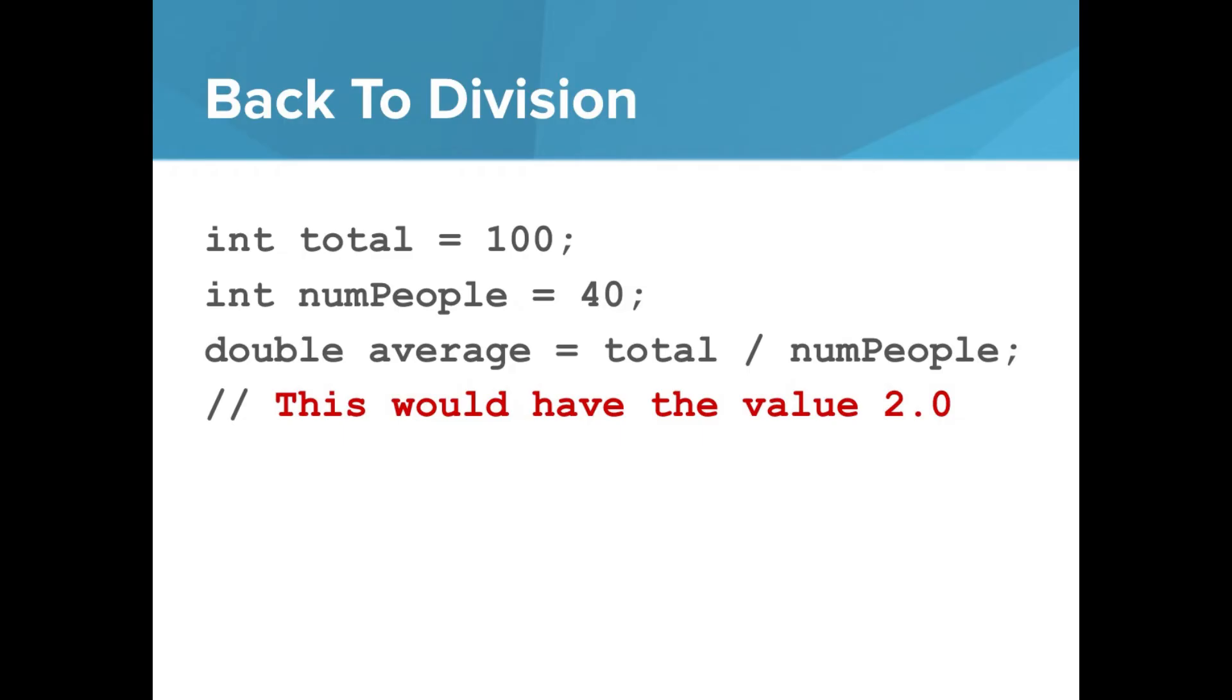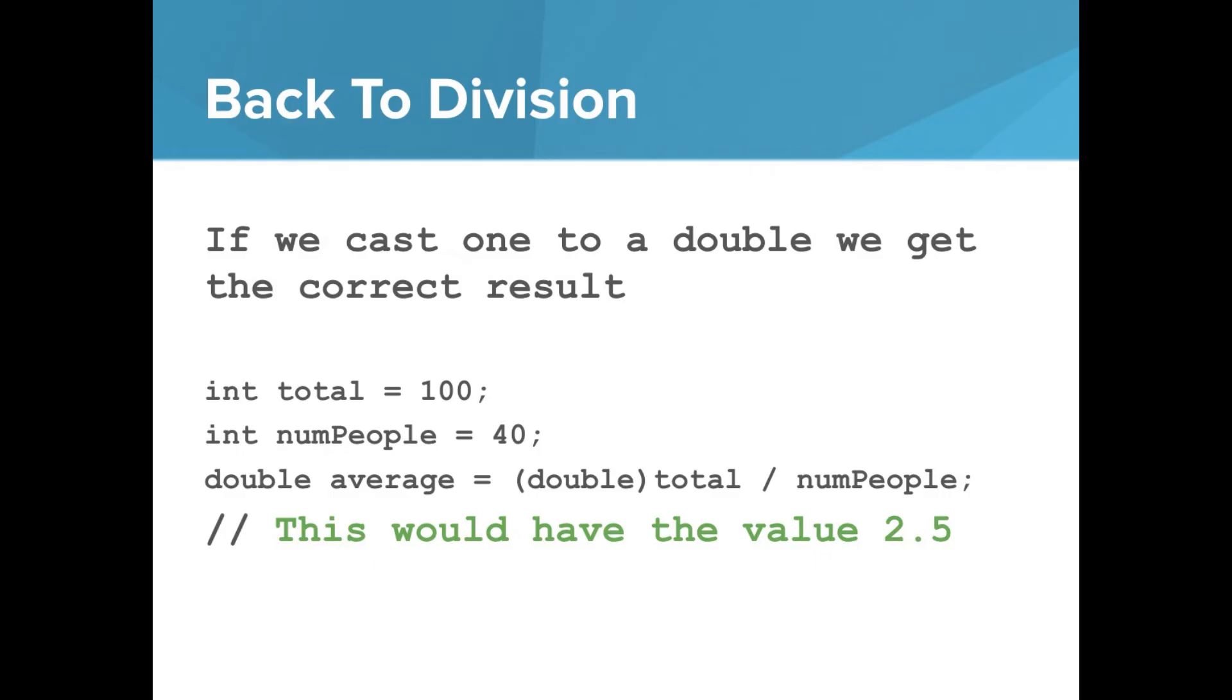So to get around this, what we would do is cast one of them to a double. Then we'll get the correct result. So you can see we cast total to a double first before dividing it. Remember, mixed division where one is a double and one is an int will return a double. So this would have the value 2.5.